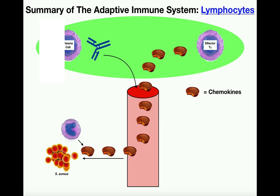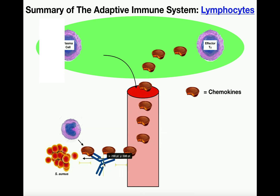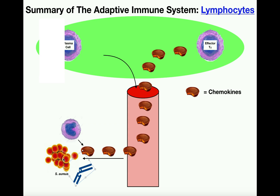So here's what's going on visually: the plasma cell is generating antibodies, which are secreted and go into the blood — perhaps through the lymph first and then the blood. The antibody travels through the blood, exits into the damaged tissue, and binds to and attacks the pathogen.